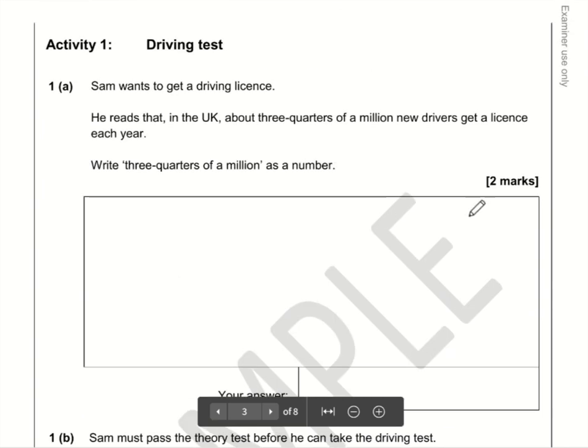We need to write three-quarters of a million as a number, and it's kind of hard to explain how to get here. You kind of need to have some basic knowledge, which is that three-quarters of a million is seven hundred and fifty thousand.